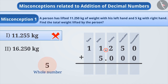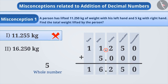Since 5 is a whole number, we can write 0 in the place of tens, hundreds, and thousands. Here, 0 is used as a placeholder. With the help of this, now both numbers have equal number of digits after the decimal point. Adding these numbers will give the correct answer as 16.250 kg.